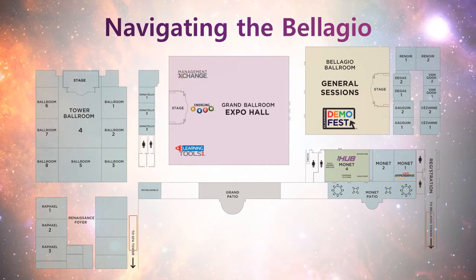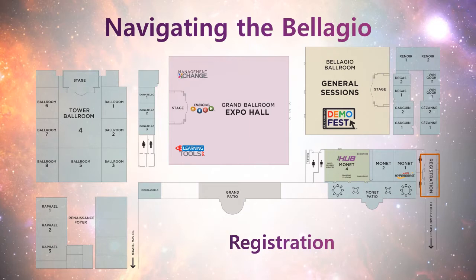The first thing you're going to want to do when you get to DevLearn is go to the registration desk, check in, and pick up all of your conference materials. The registration desk is going to be on the right-hand side of the map, just outside of the Bellagio Tower hallway. I want to spend a little bit of time in this video going over the different spaces in the conference facility and what's going to be taking place, to help you better prepare for navigating the conference.